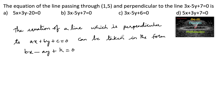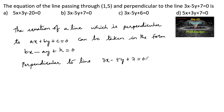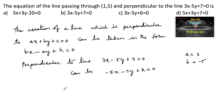According to the question, the line is perpendicular to 3x - 5y - 7 = 0, where a = 3 and b = -5. So we can write: -5x - 3y + k = 0, which passes through (1, 5).